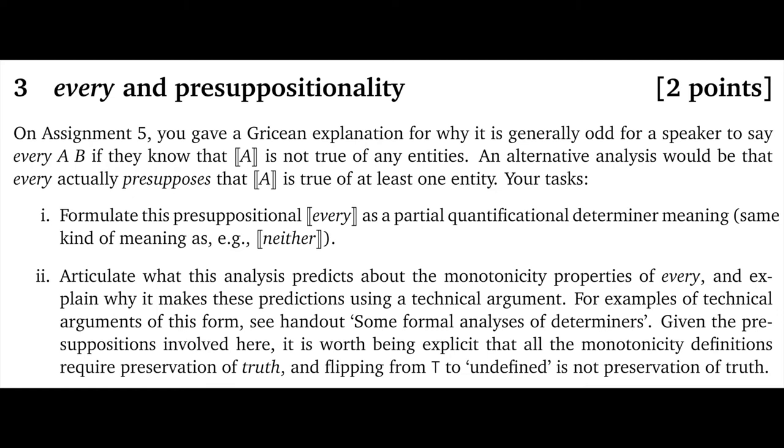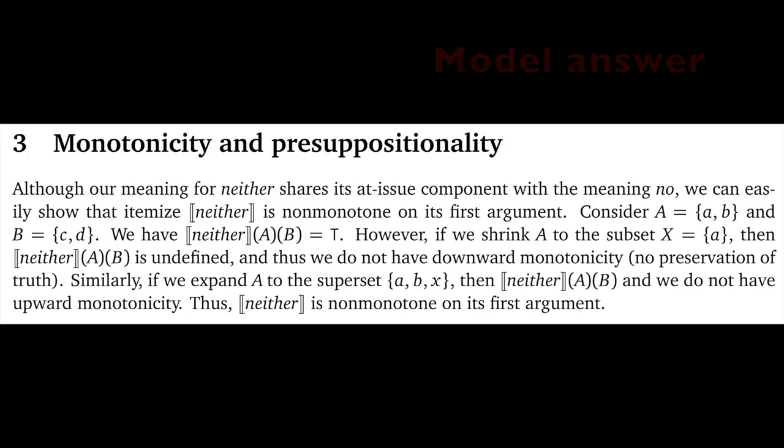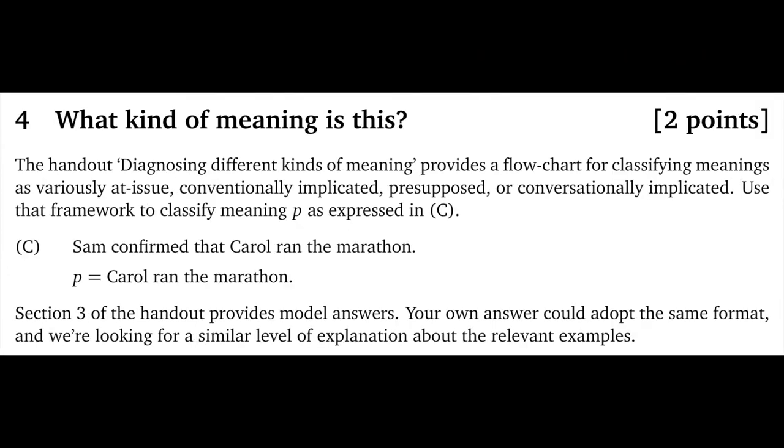This question is somewhat unique, but I did do a related one where I just show that 'neither' is not downward monotone, even though its at-issue content is just like that of determiner 'no', which we know to be downward monotone.